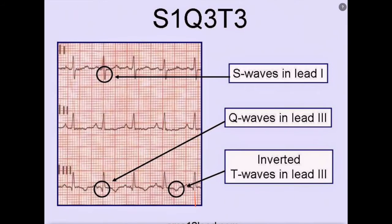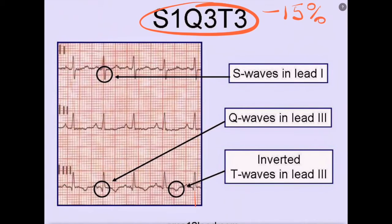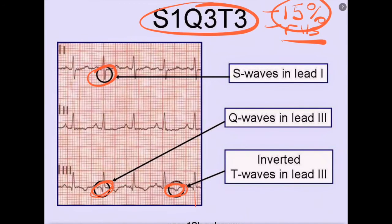The first classic finding in PE is S1Q3T3. You'd think it occurred in every single person with PE, but it actually only occurs in about 15% of people. It's a sign of right heart strain, which can occur in PE, heart failure, asthma, COPD, and lots of different things. It's basically a big S wave in lead one, some Q waves in lead three, and T wave inversion in lead three — none of which you'd normally expect. That's S1Q3T3, only occurring in 15% of people with PE.